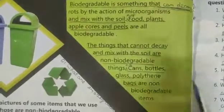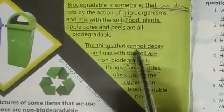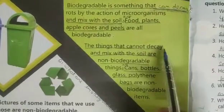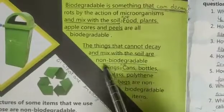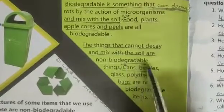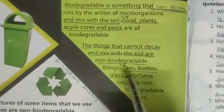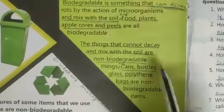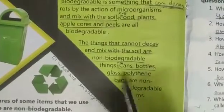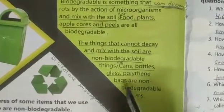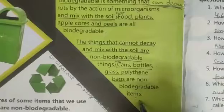Now come to the next one. The things that cannot decay and mix with soil are non-biodegradable. The examples are cans, bottles, glass, and polythene bags — these are non-biodegradable things.